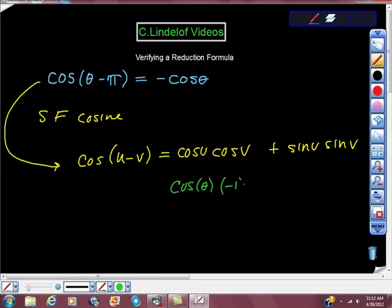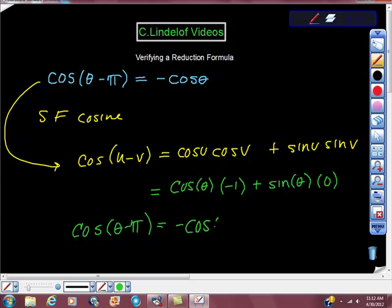So times negative 1 plus sine theta times sine of pi. Sine of pi happens to be 0, doesn't it? I'm just going to do this arithmetic here, and we're going to verify that cosine of theta minus pi is actually equal to the opposite of cosine of theta.